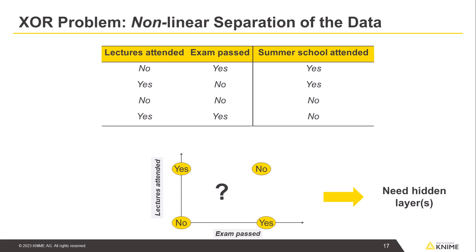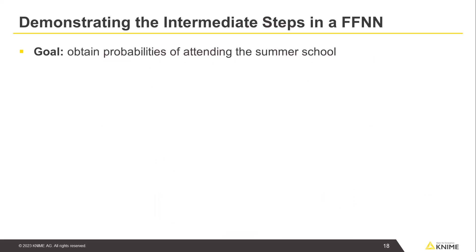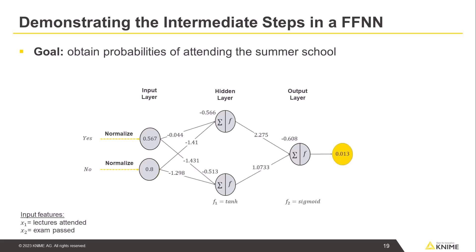Adding more than one hidden layer is optional but can be necessary to find a balance between underfitting and overfitting. Let's now look at the steps that the data takes when traveling from layer to layer in a feedforward neural network. Our goal is to train a network that produces probabilities of attending the summer school based on the two other variables as input features.